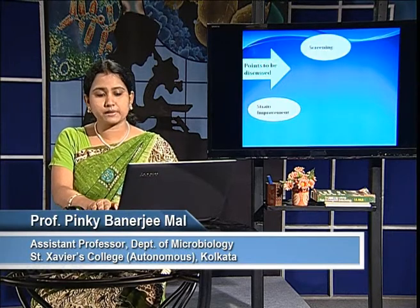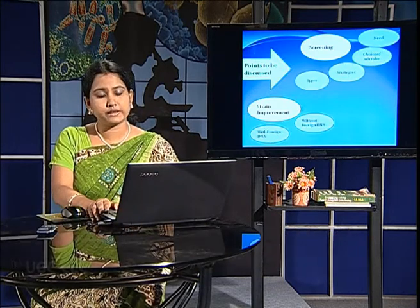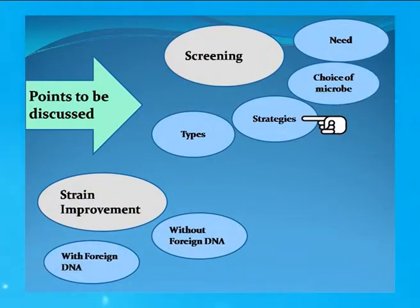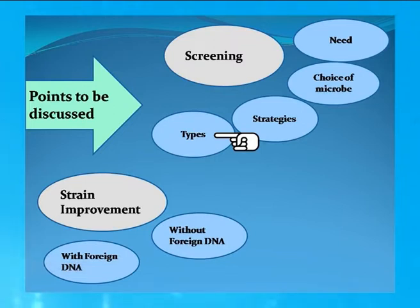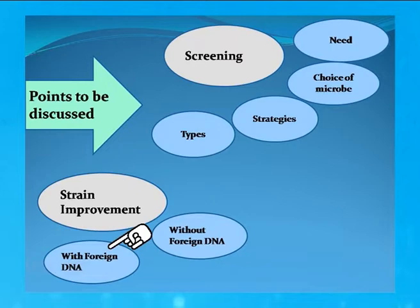Under the topic screening there are four sub-points: namely need of screening, choice of microbe, strategies for screening, and types of screening. And under strain improvement there are two sub-points: strain improvement without the help of foreign DNA, and strain improvement with the help of foreign DNA.